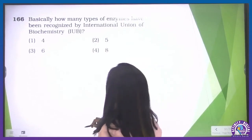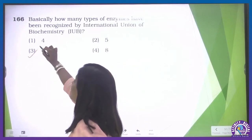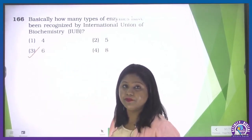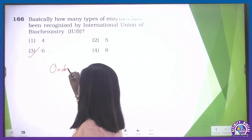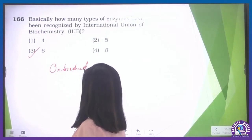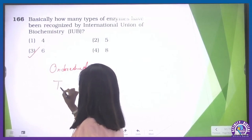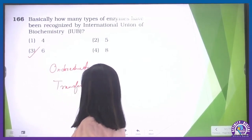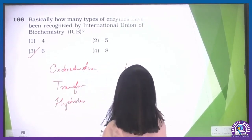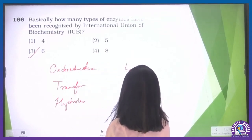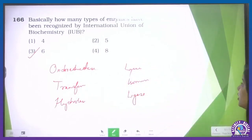How many types of enzymes have been recognized by the International Union of Biochemistry? It is six types. The six classes are: oxidoreductase, transferase, hydrolase, lyase, isomerase, and ligase. These are the six classes of IUB.